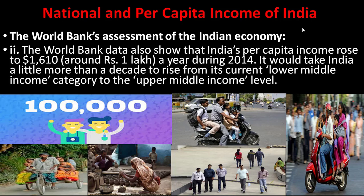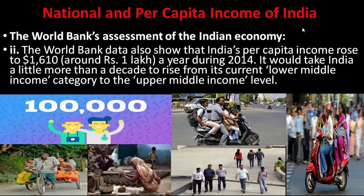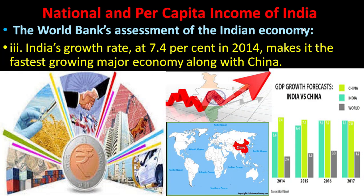World Bank data also shows that India's per capita income rose to $1,610 — around ₹1 lakh a year — during 2014. It would take India a little more than two decades to rise from its current lower middle income category to the upper middle income level. India's growth rate at 7.4% in 2014 makes it the fastest growing major economy along with China.